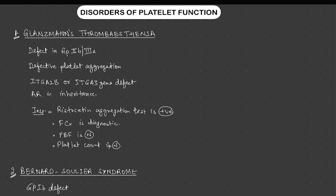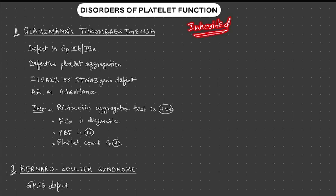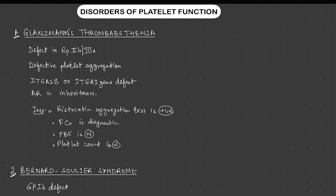In previous videos we have discussed disorders of platelet number, meaning thrombocytopenia. We have almost covered every cause of thrombocytopenia, but in this video we will be focusing on platelet function. What are the disorders which cause platelet dysfunction? These are mostly inherited conditions. There are five of these conditions which we will be discussing — these are the most common causes. Other minor rare variants exist but need not be considered.